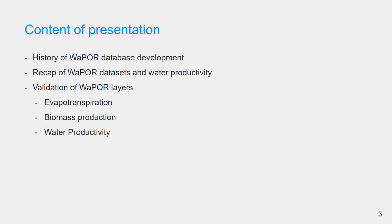Today I am going to discuss the following items: starting with the development of the WAPOR database and the different versions that led to the current database. Then I will give a brief recap of the WAPOR dataset and the definition of water productivity, followed by a detailed review of three of the WAPOR data layers, namely evapotranspiration, biomass production and water productivity.